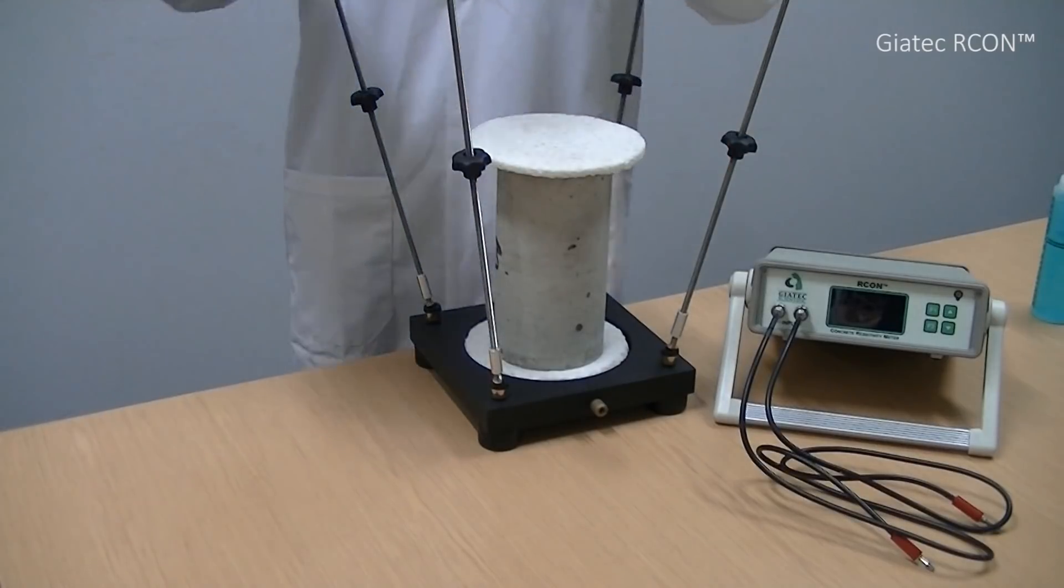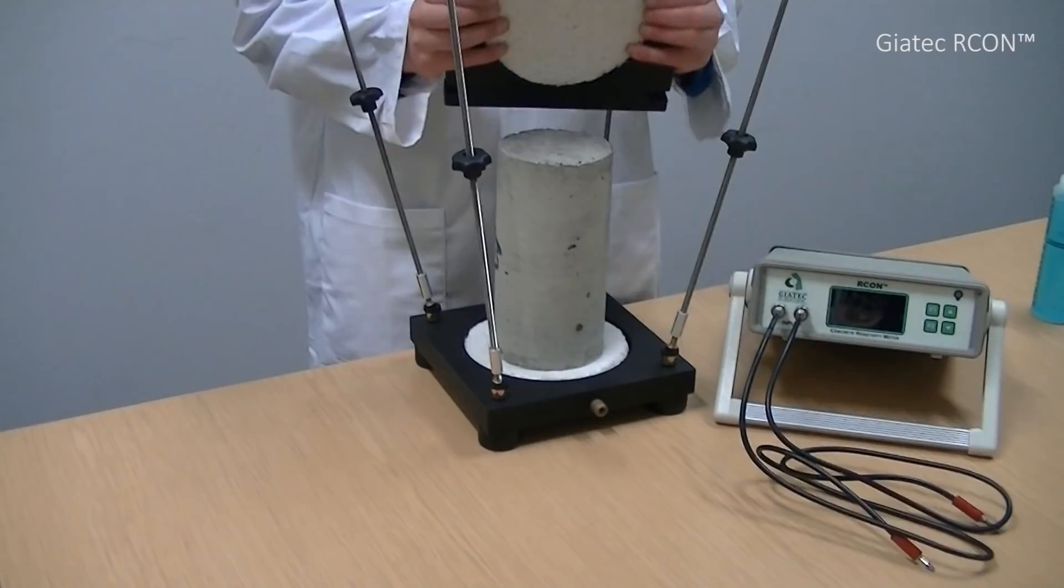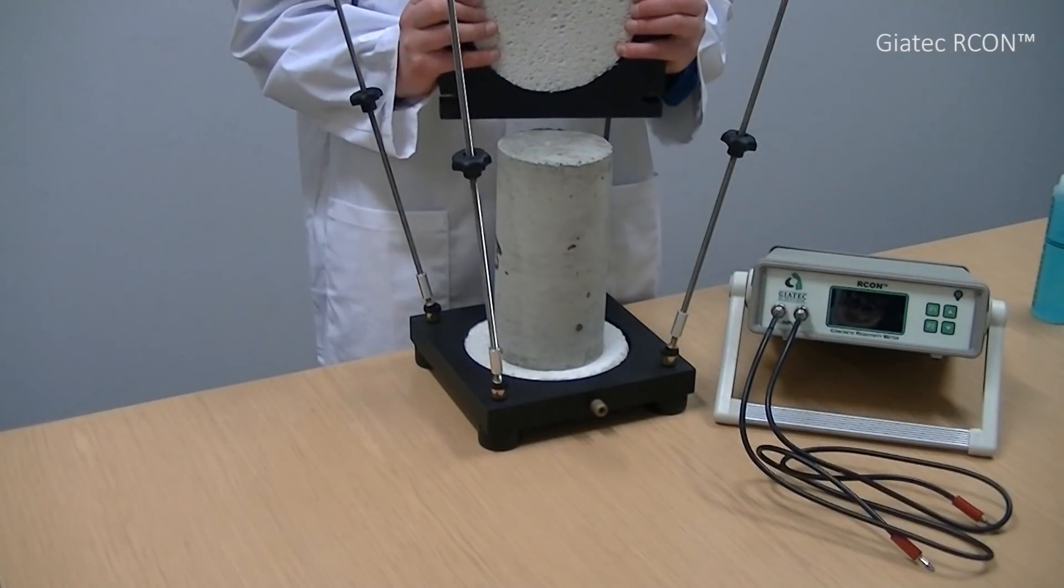I place the top plate on the saturated sponge and I should make sure that the sponge is placed inside the circular portion of the top plate.